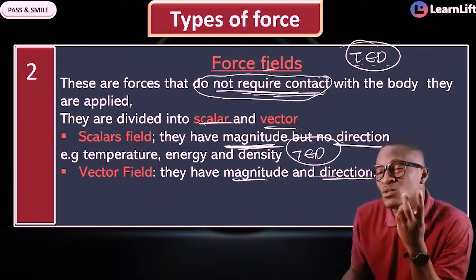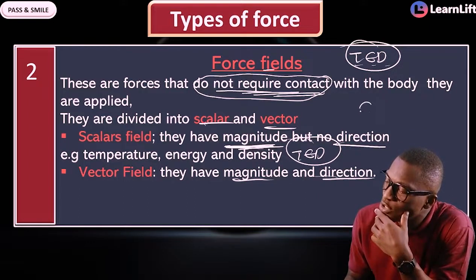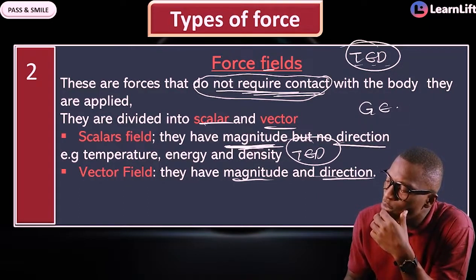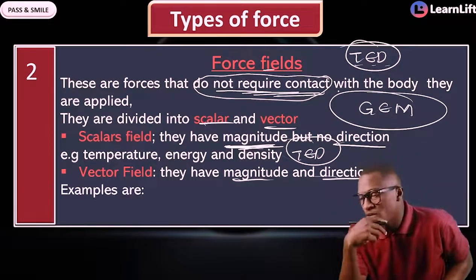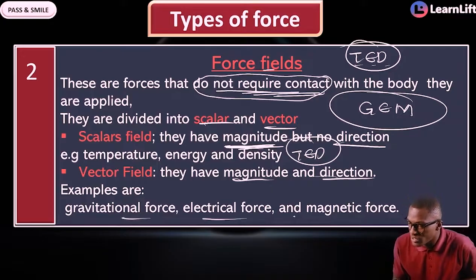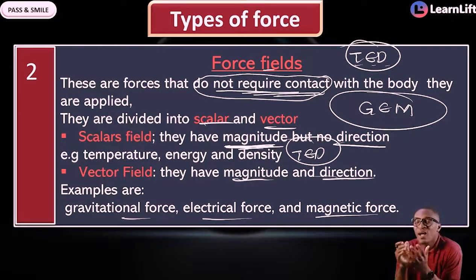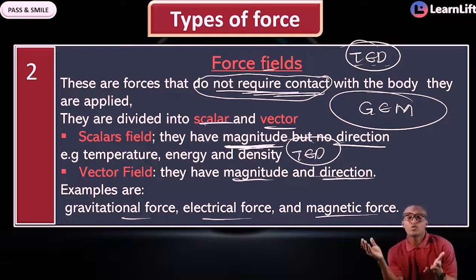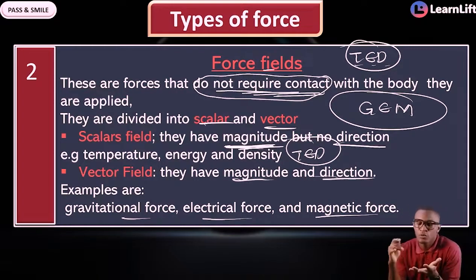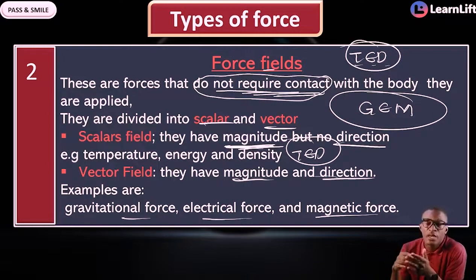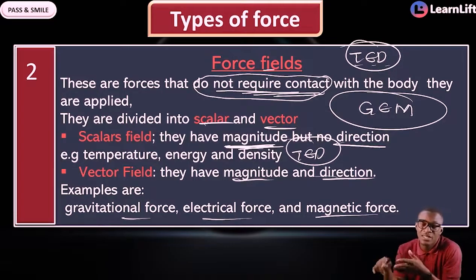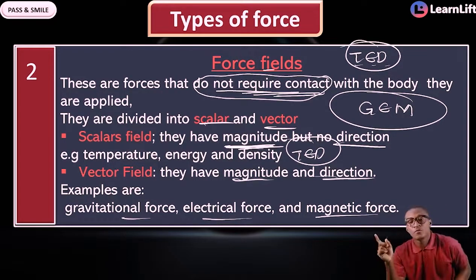The next type is vector field forces. These have both magnitude and direction. There are three examples: gravitational force, electric force, and magnetic force. Note that three of them have both attractive and repulsive force, but one lacks a repulsive force — we will talk about that later.